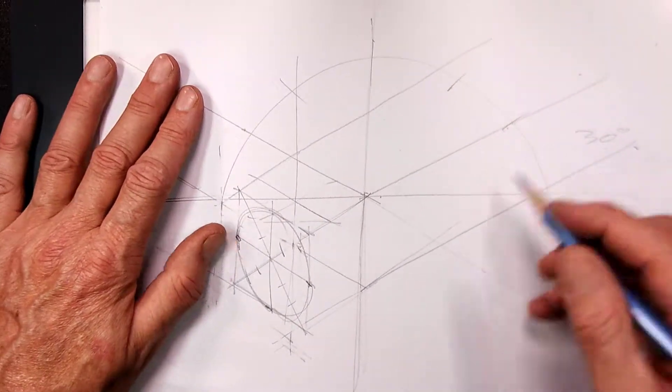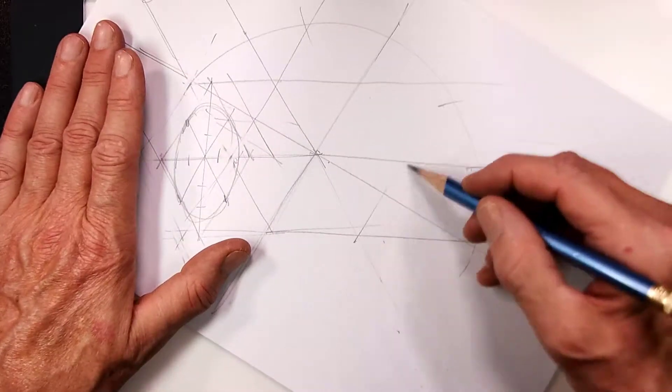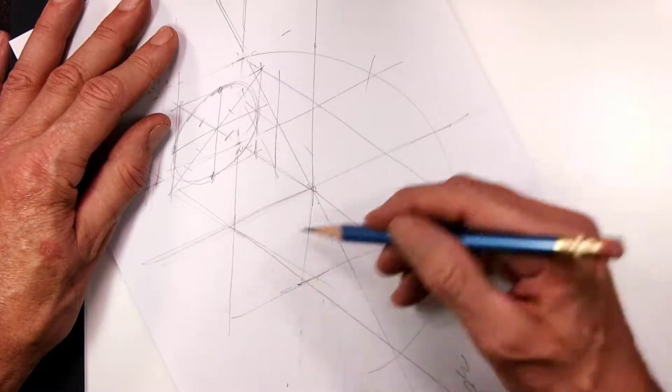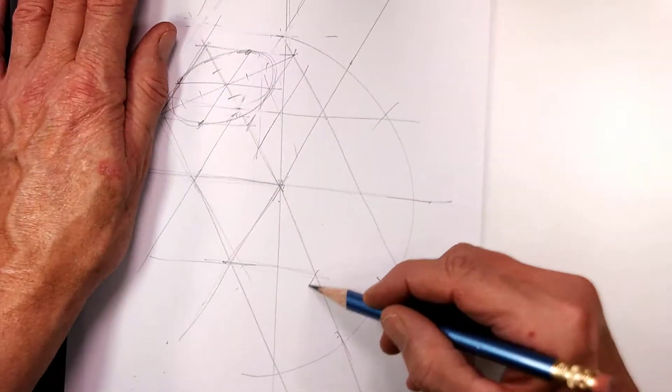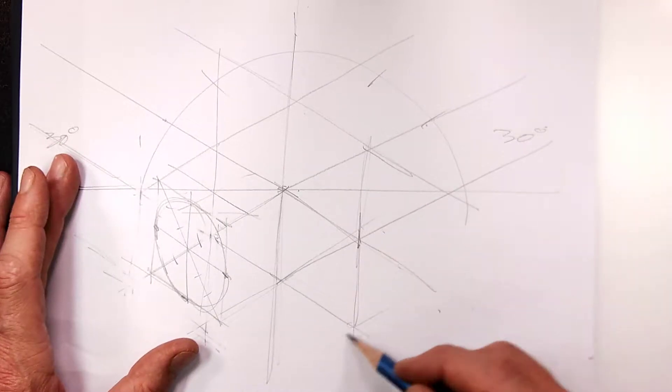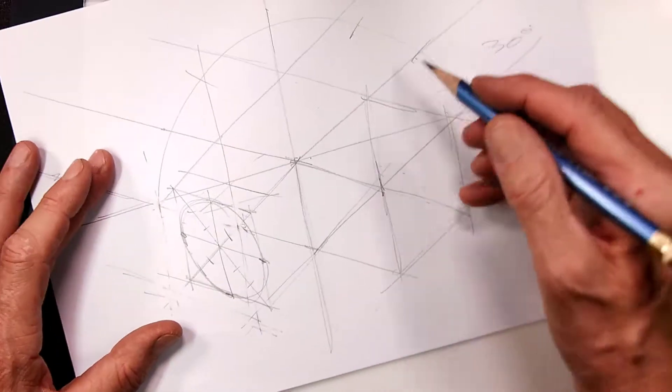And then I'm going to draw an ellipse over here just like that. Remember that this has to be three quarters.